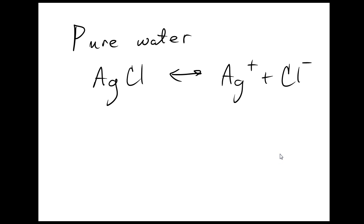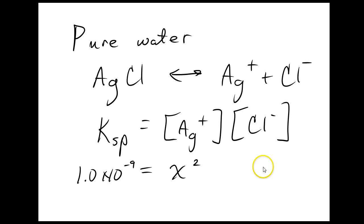Here's our equilibrium. There's our Ksp expression. I'm going to replace Ag with X, and for every Ag, I'm going to get a Cl, so I'm going to replace Cl with X. So X squared is equal to Ksp.